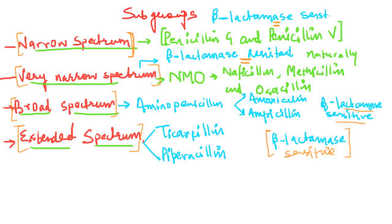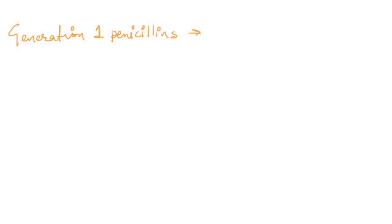Generation 1 penicillins act against various types of cocci such as streptococci, pneumococci, and meningococci. They also act against the bug that causes syphilis, which is Treponema pallidum. Just remember the cocci and Treponema pallidum, and you've covered the spectrum of generation 1 penicillin.